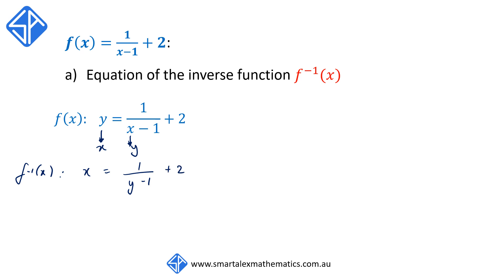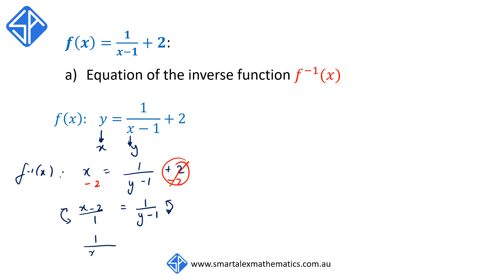We make y the subject by first subtracting 2 from both sides, giving us x minus 2 is equal to 1 over y minus 1. Since x minus 2 is the same as x minus 2 over 1, we flip both fractions to get 1 over x minus 2 is equal to y minus 1. Adding 1 to both sides gives us the equation of the inverse function: y is equal to 1 over x minus 2 plus 1.